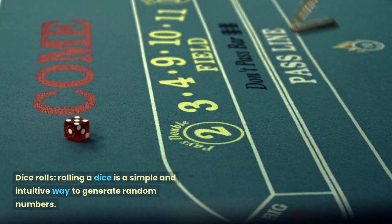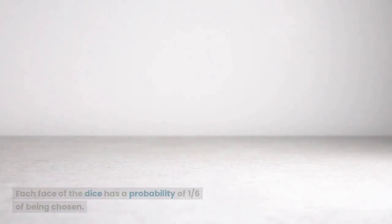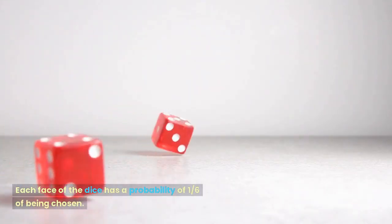Dice rolls. Rolling a dice is a simple and intuitive way to generate random numbers. Each face of the dice has a probability of one-sixth of being chosen.